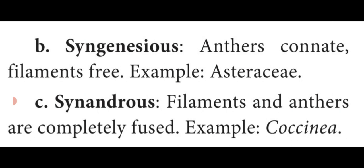Dear students, I hope you all understood what is androecium. A single unit of androecium is stamen. We have seen the different parts of a stamen, then fusion of stamen divided into connation and adnation — connation divided into three types: adelphous, syngenesious, and synandrous. The remaining we will see in the next video class. God bless you. All the best children.